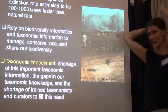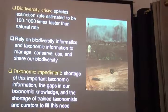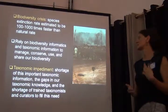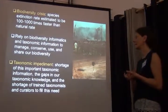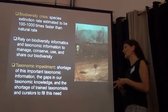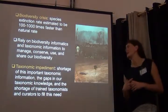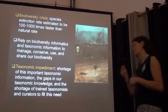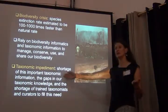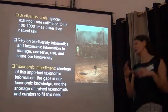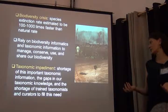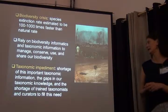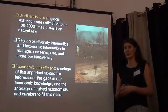We're all aware we're in the middle of a biodiversity crisis, with species extinction rates that — while estimates vary — represent a real and serious problem. For managing and conserving biodiversity, we're relying on biodiversity informatics and taxonomic information. One very obvious problem for systematists and taxonomists is what's called the taxonomic impediment: a shortage of taxonomic information, gaps in taxonomic knowledge, and a shortage of trained taxonomists and curators.